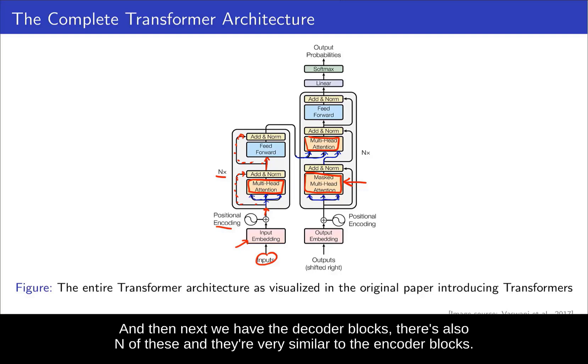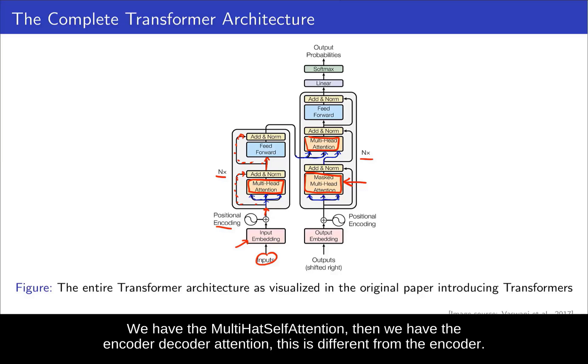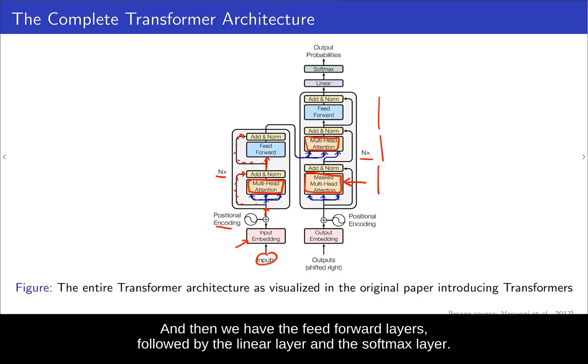And then next we have the decoder blocks. There's also n of these. And they're very similar to the encoder blocks. We have the multi-head self-attention. Then we have the encoder decoder attention. This is different from the encoder. And then we have the feedforward layers, followed by the linear layer and the softmax layer.